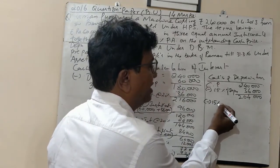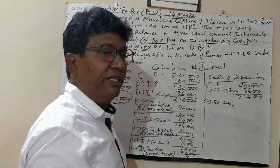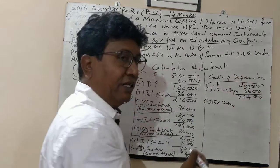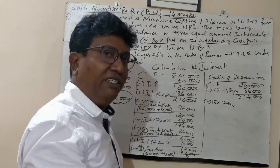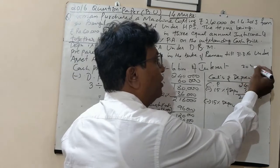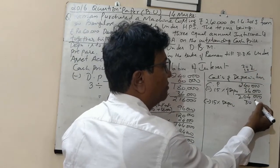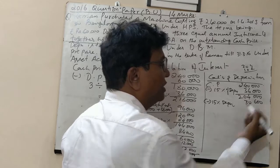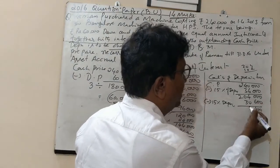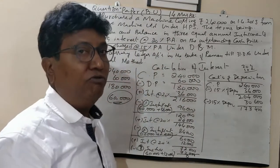For second year depreciation, we calculate 15% on ₹2,04,000. 10% is ₹20,400 and half of that is ₹10,200, so 15% equals ₹30,600. The balance at end of year two comes to ₹1,73,400.